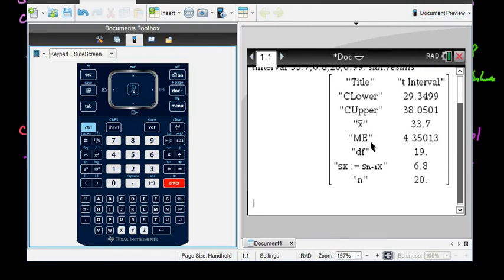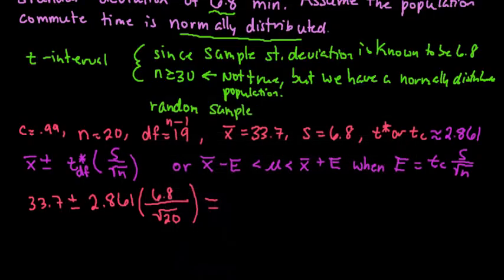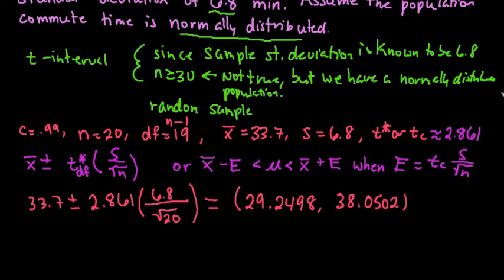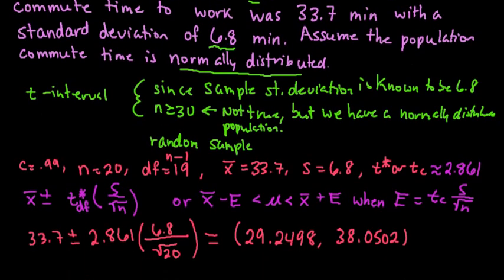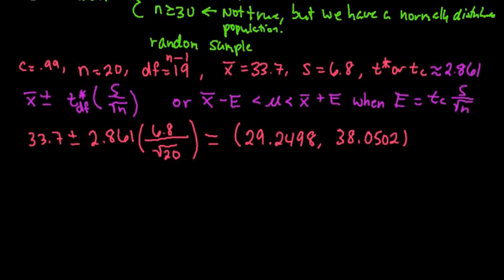So I'm just going to write this down. Our lower limit is 29.2498. The upper is 38.0502. And for this, remember that we want to always put it back in context of the original problem. So we would go back up, and remember we're talking about the mean commute time to work.